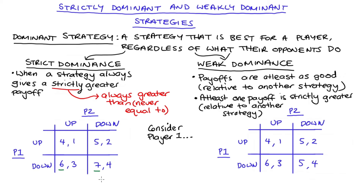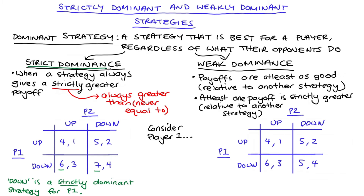Down is definitely a dominant strategy for player one, because regardless of what player two does it is in player one's best interest to play down. Note that player one always gets a strictly higher amount by playing down compared to up: six is strictly greater than four, and seven is strictly greater than five. That matches our definition of strict dominance, so down is a strictly dominant strategy for player one. If we remove player two's payoffs to reduce clutter, comparing just the rows you can see that down always gives a strictly higher number than up.